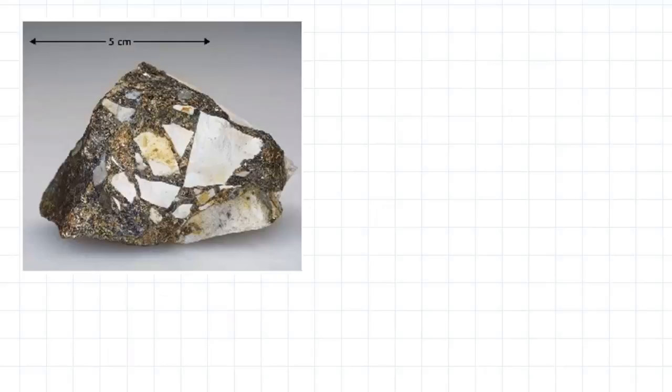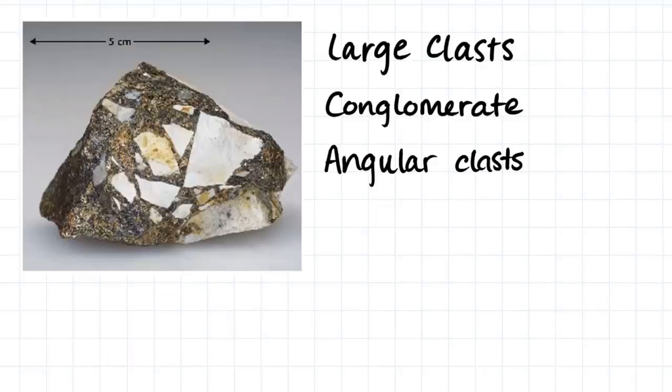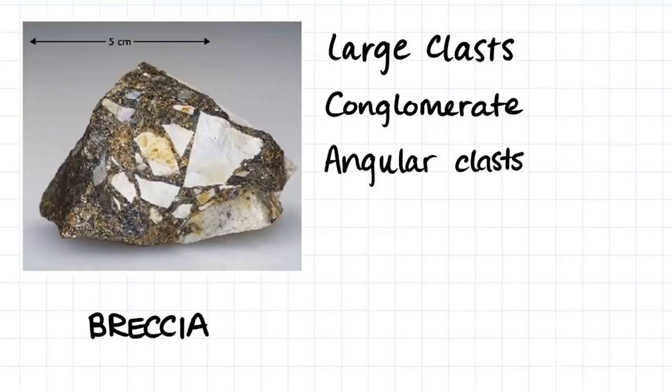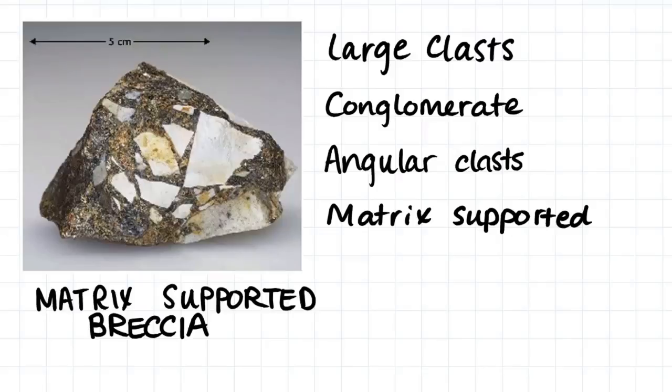Here we have another conglomerate. However, these clasts are quite angular in shape, unlike the conglomerate we just looked at, which had quite round clasts. Therefore, we would call this sample a breccia. Furthermore, this sample seems to be matrix supported as there is quite a lot of matrix between all of the clasts. Therefore, we would call this sample a matrix supported breccia.